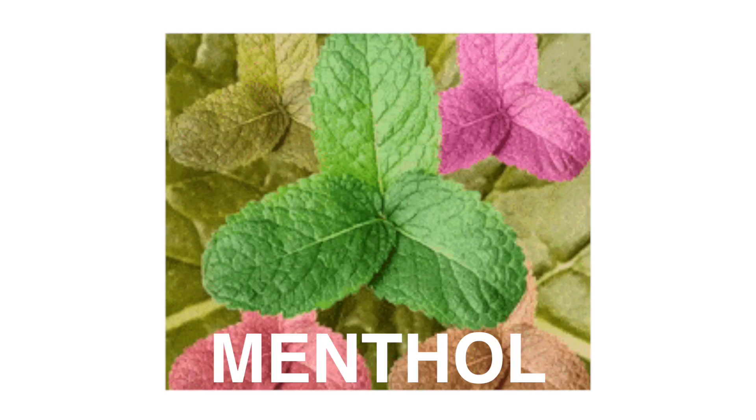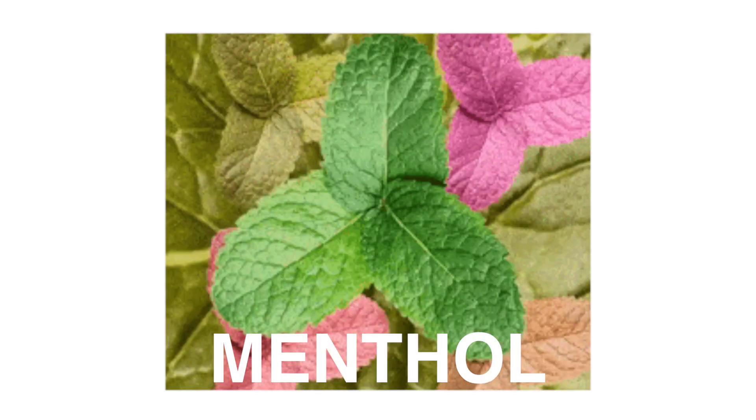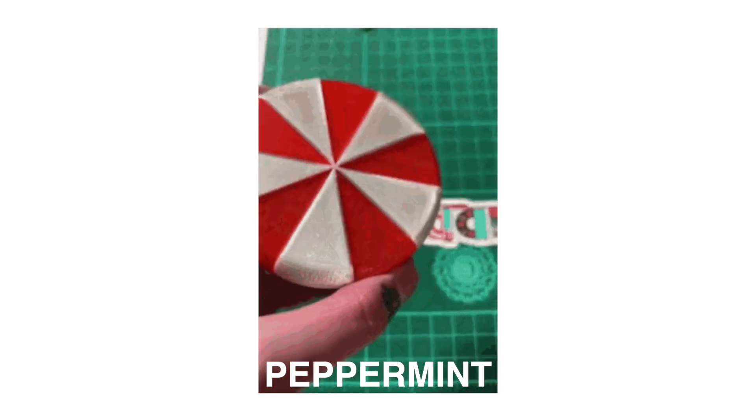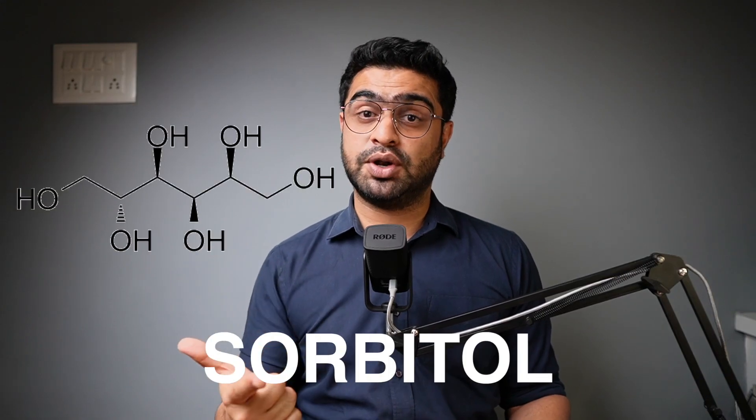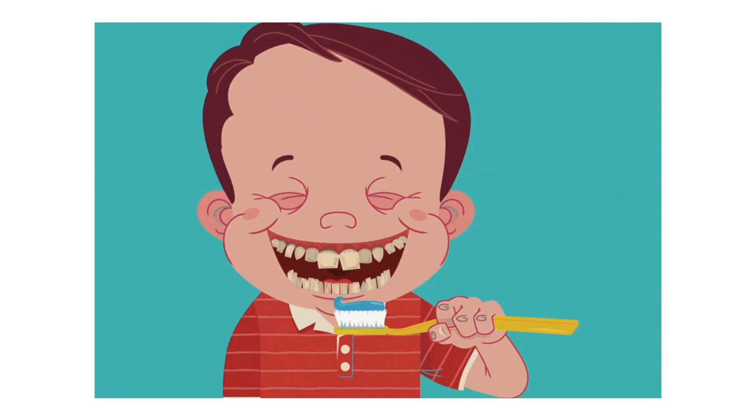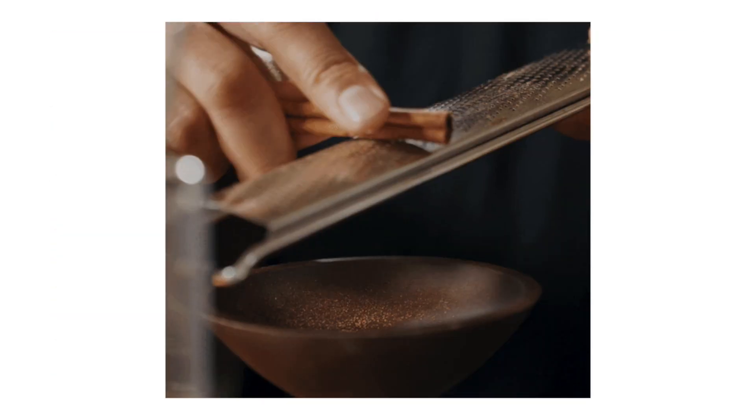Number three is flavoring agents. Flavors make toothpaste taste and smell appealing. They get their flavor from menthol, peppermint, and sweetening agents such as saccharin and sorbitol. Some toothpastes are even fruit-flavored for children's use, like mint, cinnamon, and bubble gum. Although these ingredients may taste sweet, toothpaste does not contain sugar, so it won't cause any tooth decay.